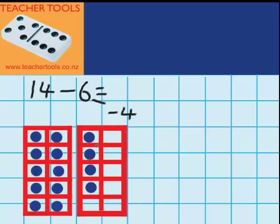You can see that means I'm going to take away 4 counters. Now I need to take away, so let's do that. 1, 2, 3, 4, all gone. Now, I need to take away 6 but I've only taken away 4 which means I've got 2 more counters to take away. So, take away 2 more and cross those ones out.